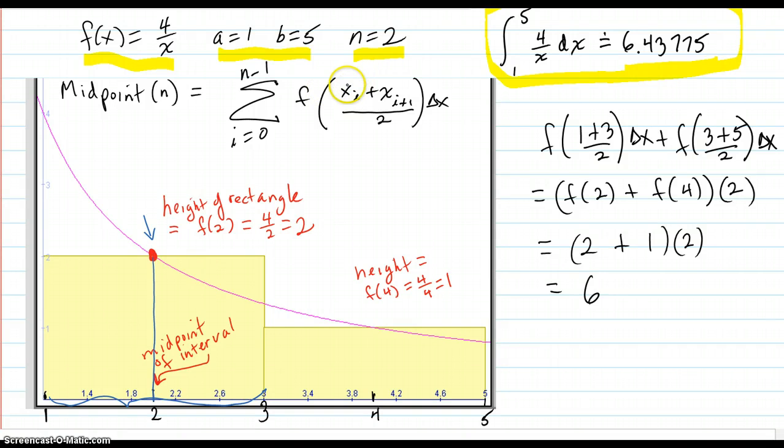The formula for the midpoint shows that you evaluate the function for each sub-interval at the midpoint, the average of the left boundary and the right boundary of the sub-interval.